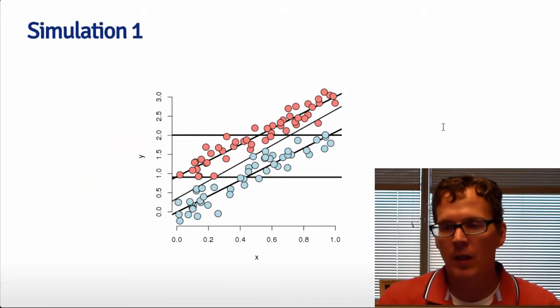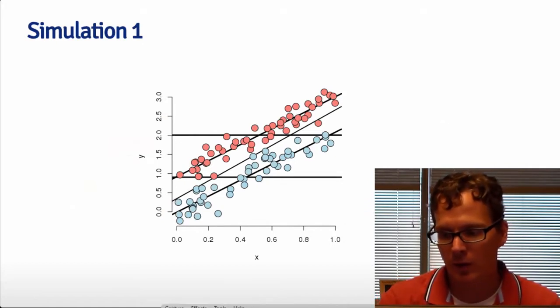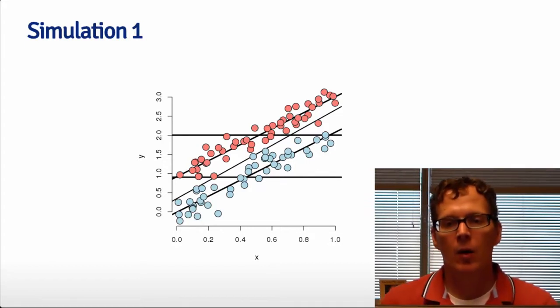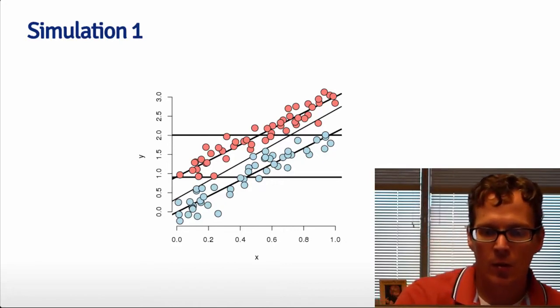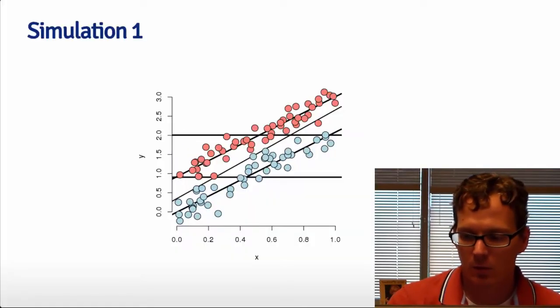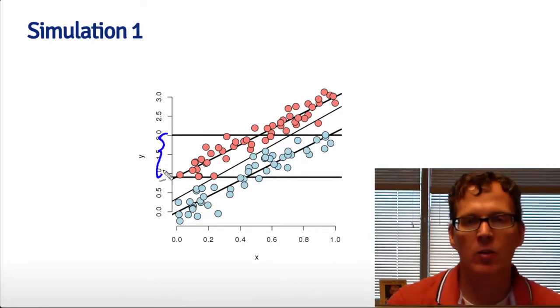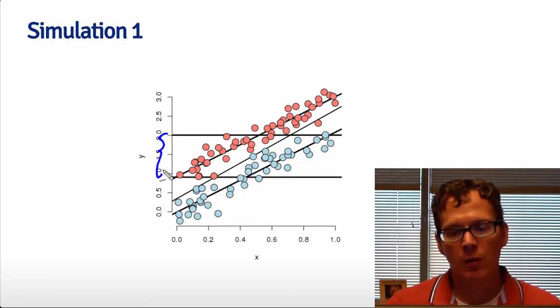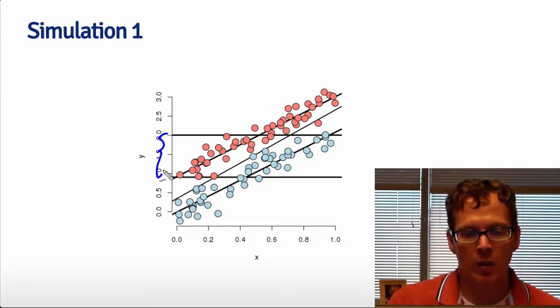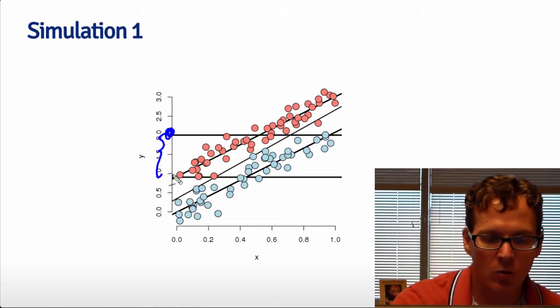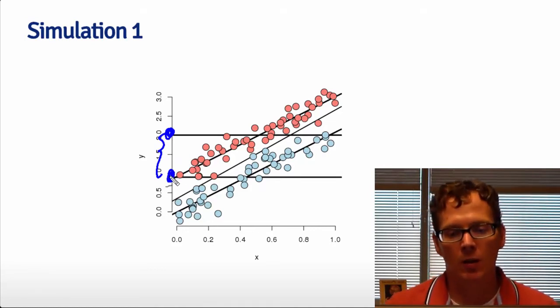Here's the first simulation. In this case, it's a pretty straightforward one. The horizontal lines show the marginal effect of group status. There's one group colored red and another group colored blue. This shows the marginal effect disregarding X. If, for example, Y was blood pressure, then this would be the mean for the group that received the treatment, and this would be the mean for the group that got the control.